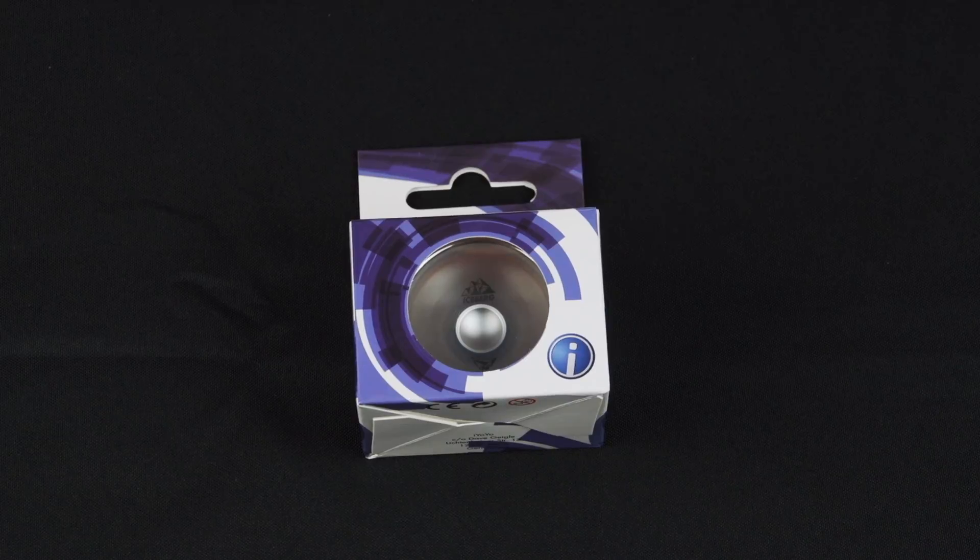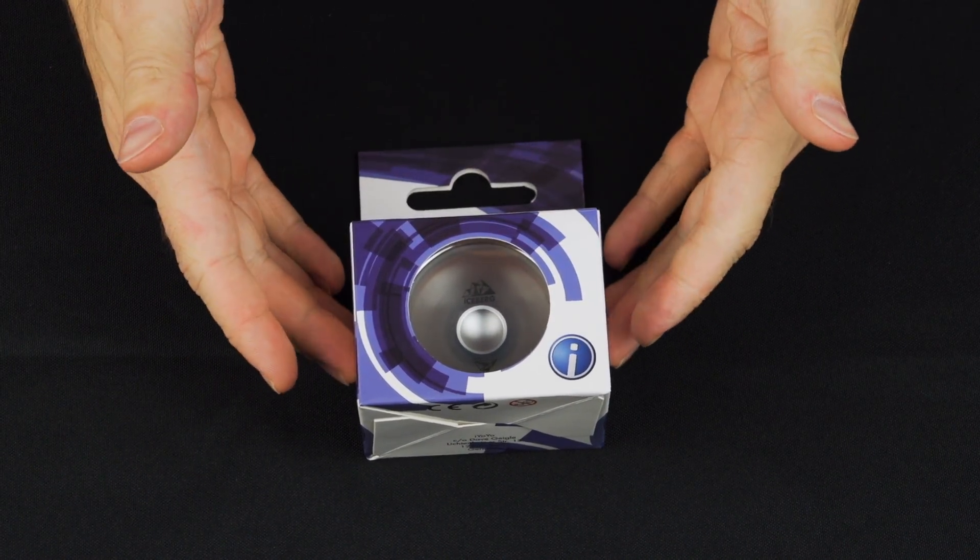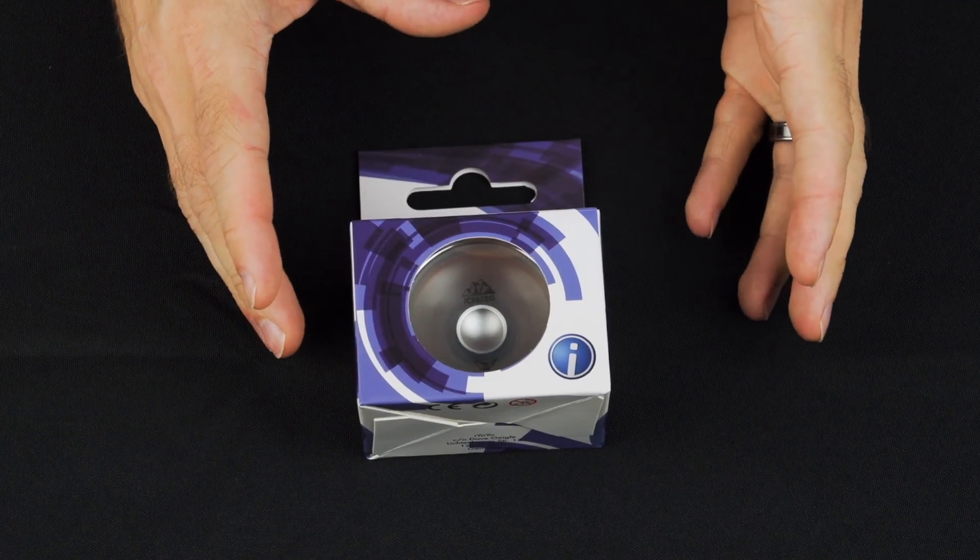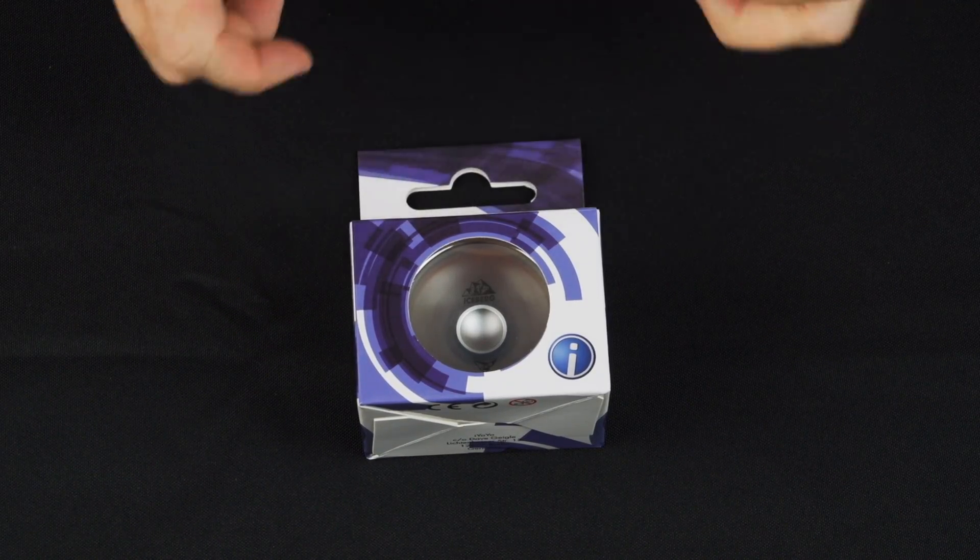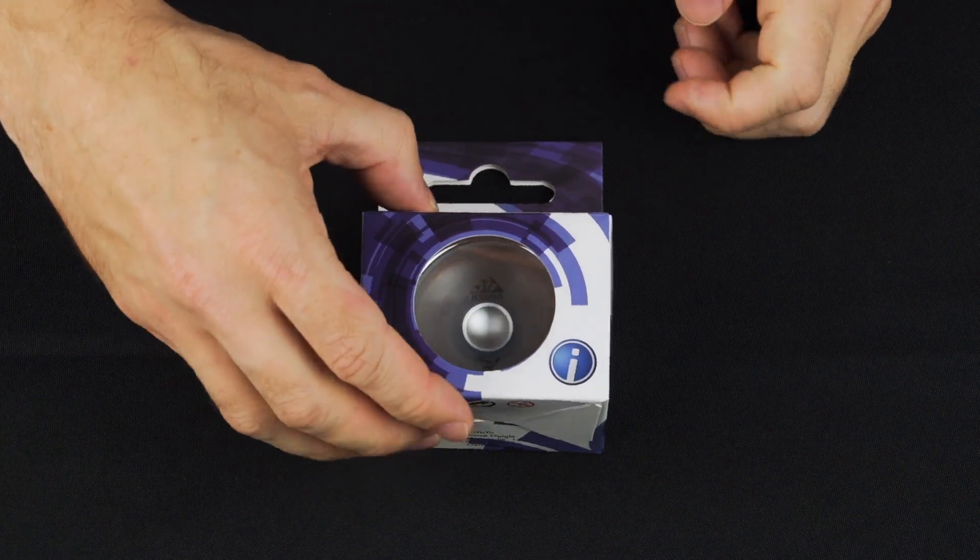This is the iYoyo Iceberg. It is a plastic metal hybrid design. A number of yoyos have come out with a similar design recently, but we feel like the Iceberg is the first one to really catch our attention. They did a lot of things right, so I'm really excited to tell you about this one.